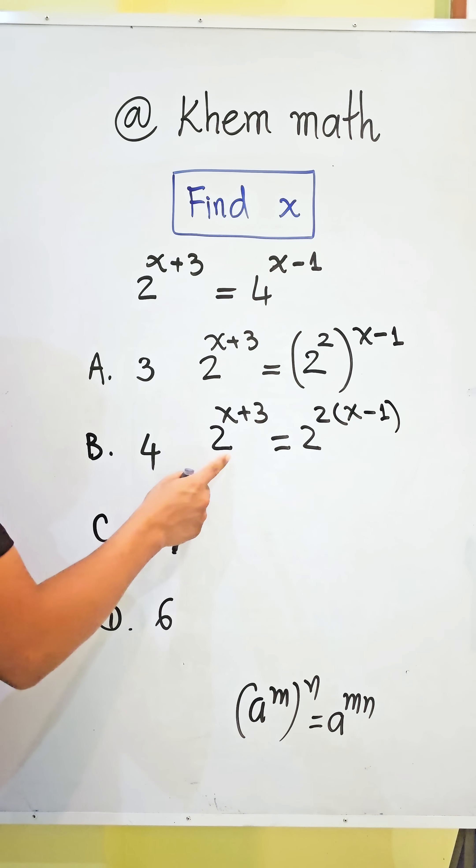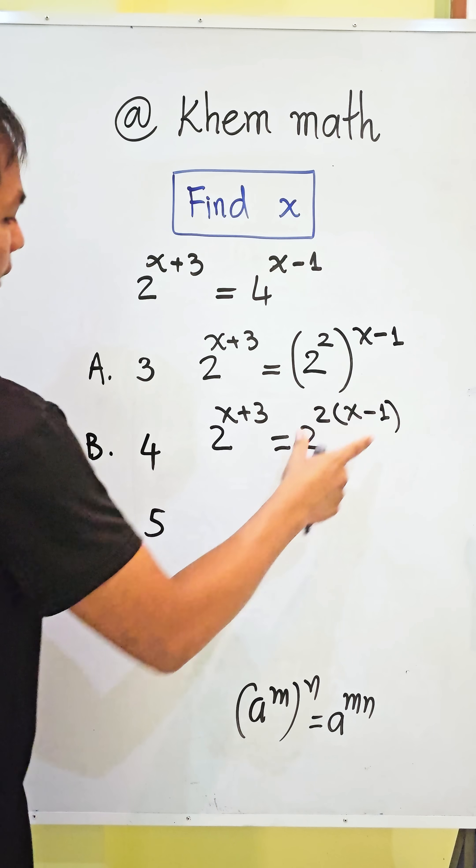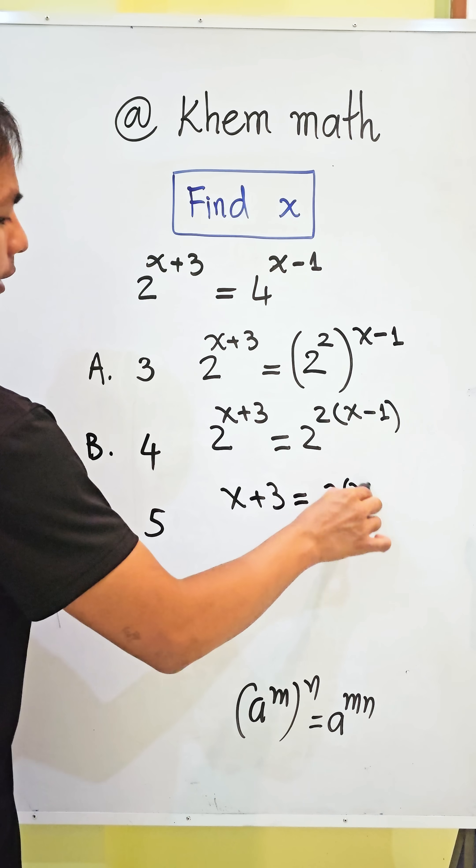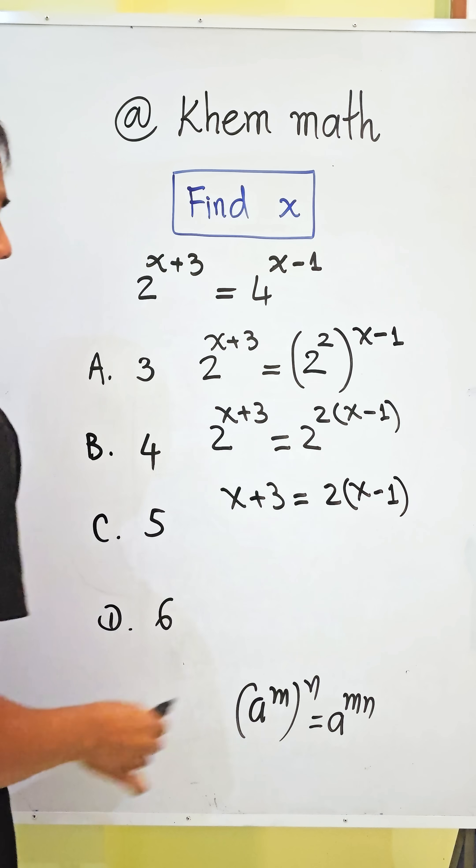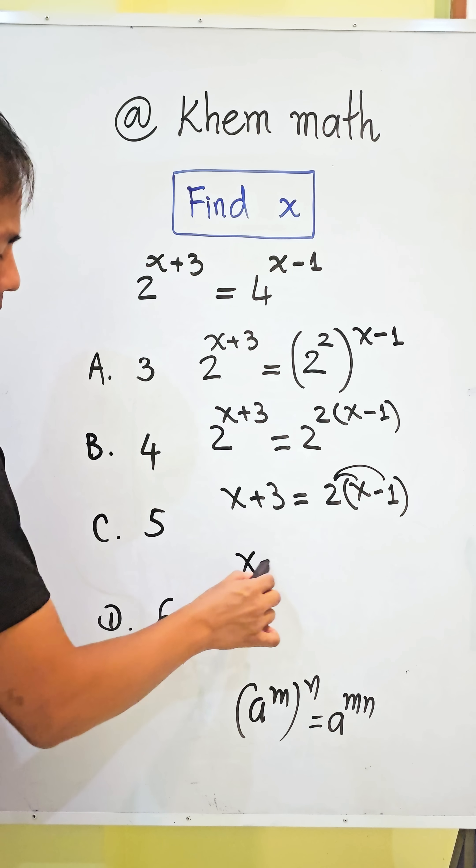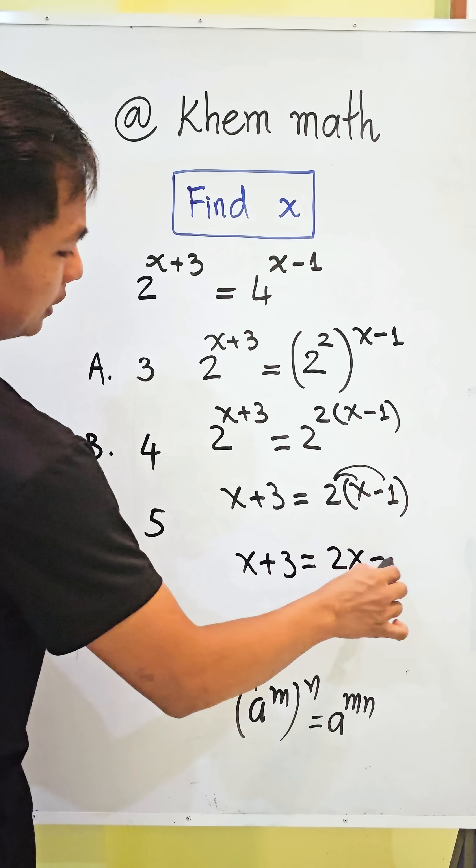So here we get the same base. We get this exponent equal to exponent. We get x plus 3 equals 2x minus 2.